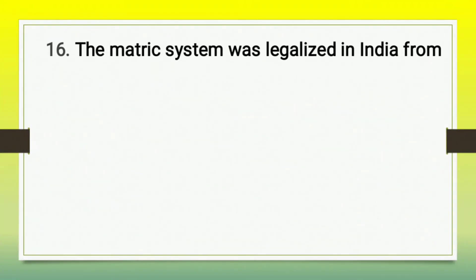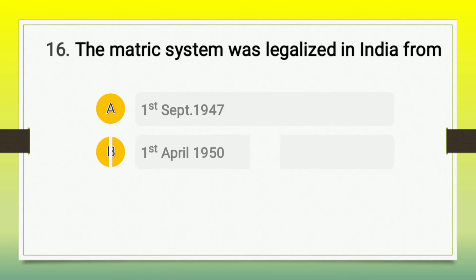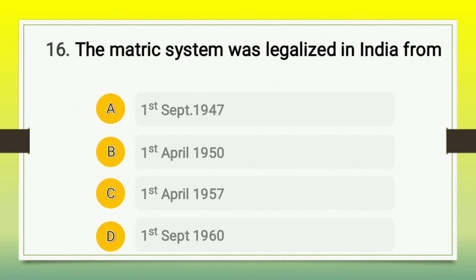Question number 16: the metric system was legalized in India from — A) 1st September 1947, B) 1st April 1950, C) 1st April 1957, D) 1st September 1960. The correct answer is option C, from 1st April 1957, the metric system was legalized in India.